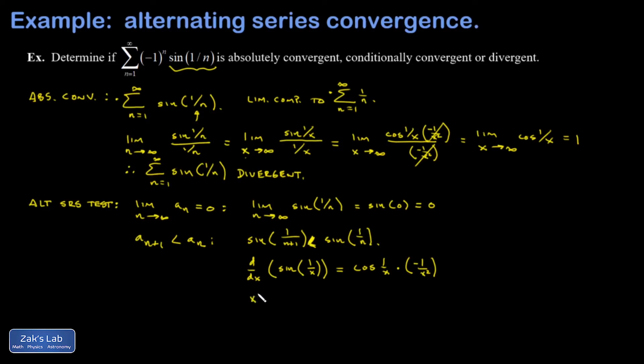Now, provided that x is bigger than or equal to 1, the cosine of 1 over x is the cosine of some angle that's less than 1 radian. Those are always positive cosines. And this piece, negative 1 over x squared, well, x squared is always positive, so this is always negative.